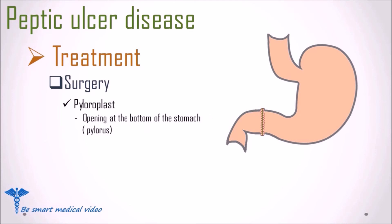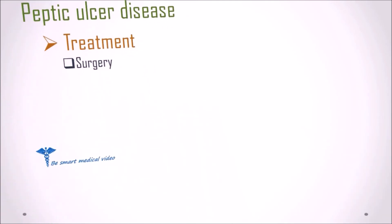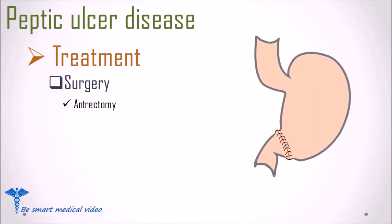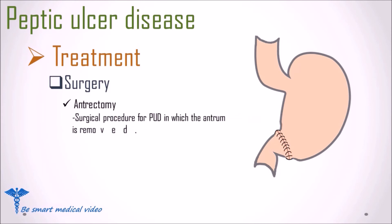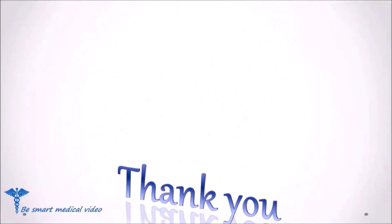The second procedure is pyloroplasty. In pyloroplasty, the surgeon widens the opening at the bottom of the stomach, also known as the pylorus, allowing food to pass more easily. The third procedure is antrectomy, also called partial gastrectomy. Antrectomy is a surgical procedure in which the antrum, the distal part of the stomach, is removed. This concludes the discussion on peptic ulcer disease. Thank you for watching.